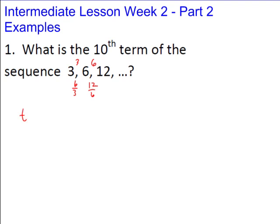Our formula is t_n = t1 times the common ratio to the (n-1). We use (n-1) because when you plug in 1 for n, you need 2 to the zero power to get t1 = 3 out. So for the tenth term: t10 = 3 times 2 to the (10-1) = 3 times 2 to the ninth power. Calculating that gives 1536, so the tenth term is 1536.